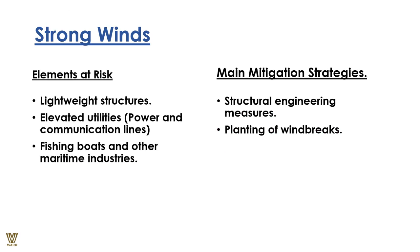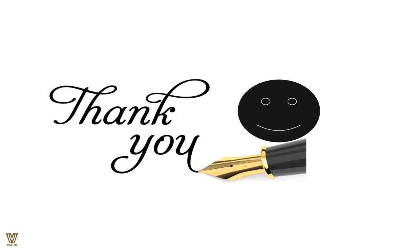For strong winds, elements at risk include lightweight structures, elevated power utility and communication lines, fishing boats, and other maritime industries. Main mitigation strategies are structural engineering measures and planting of windbreaks. With this, we come to an end of this presentation on the introduction to disaster management. Thank you very much for watching.